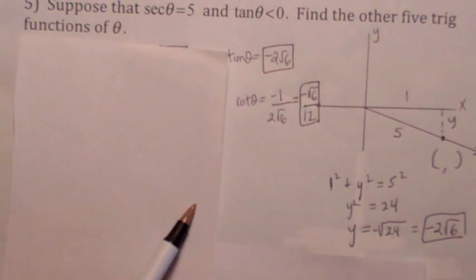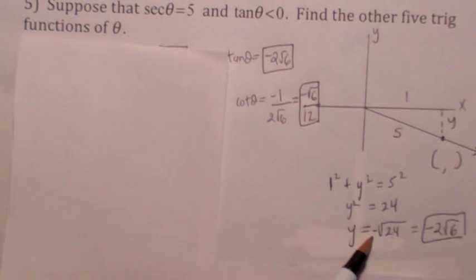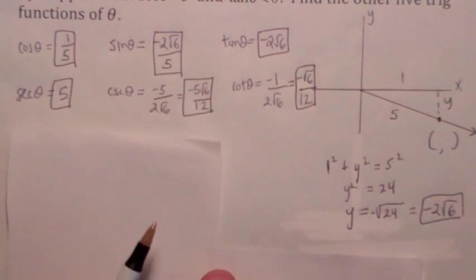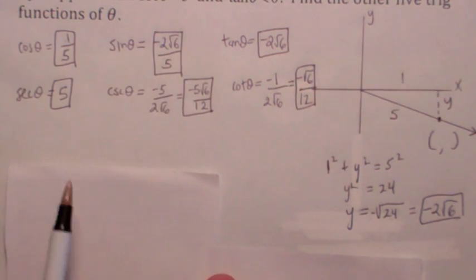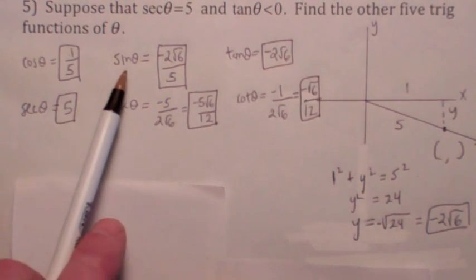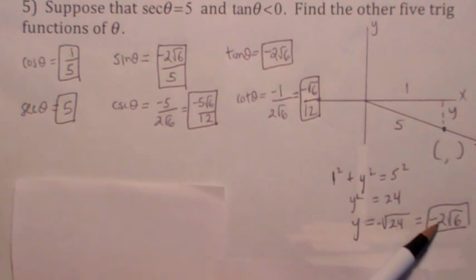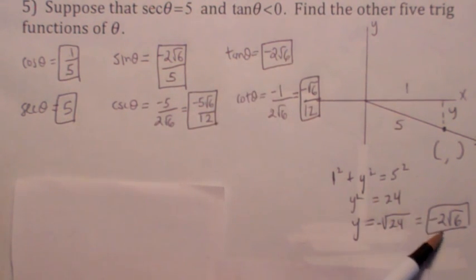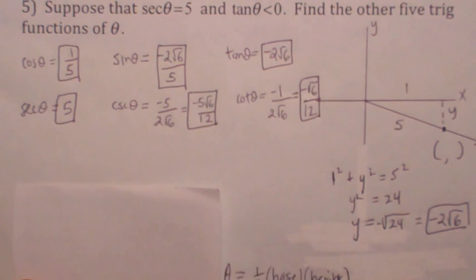Using the Pythagorean theorem: 1 squared plus y squared equals 5 squared, so y squared equals 24. Since we're in quadrant 4, y is negative: y = −√24 = −2√6. Don't forget the negative sign. Once you have all that information, you're home free. Cosine we already knew was 1/5; sine of theta is y over r = −2√6 over 5; tangent of theta is y over x = −2√6 over 1. The others are just the reciprocals of those.